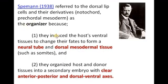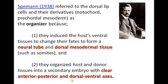The organizer within the host embryo also gives rise to a neural tube and dorsal mesodermal tissue — that is, somites. Furthermore, they organized host and donor tissue into a secondary embryo with a clear anterior-posterior and dorsal-ventral axis. The organizer could be the reason for establishing the anterior-posterior and dorsal-ventral axis of the body of any organism, including amphibia.